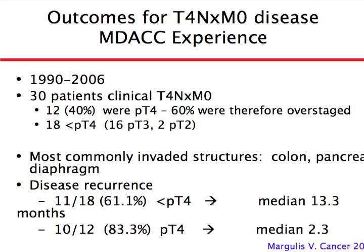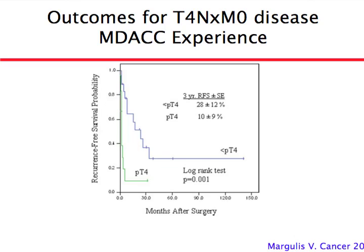The most commonly invaded structures are colon, pancreas, and diaphragm, though small intestine and major vessels can also be involved. The recurrence rate is higher with true invasion — disease coming back in about two months on average with true invasion versus about one year or more without. Survival is lower and recurrence risk is higher with true invasion into adjacent organs.